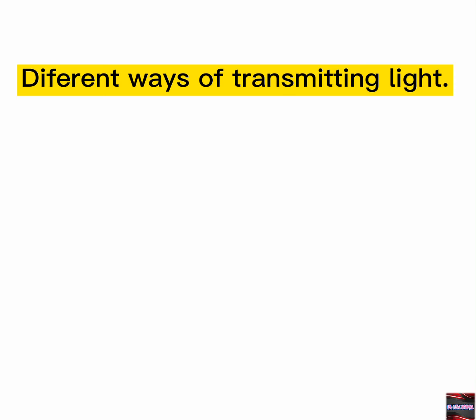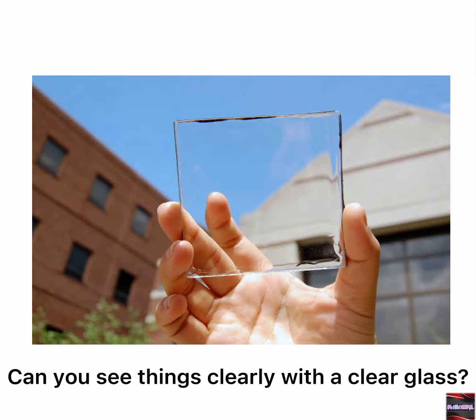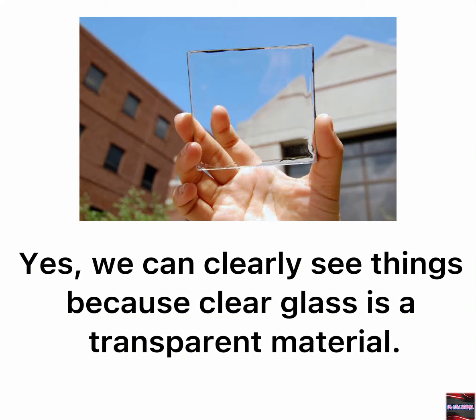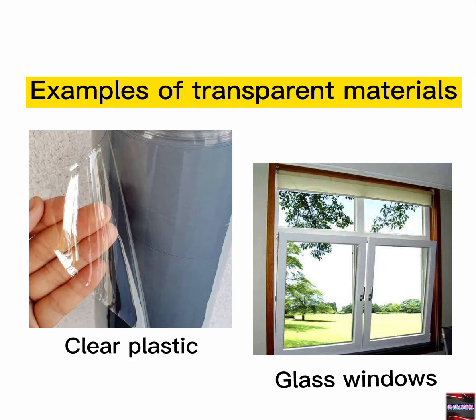Different ways of transmitting light: Transparent, Translucent, and Opaque. Can you see things clearly with a clear glass? Yes, we can clearly see things because clear glass is a transparent material. Transparent materials are materials that allow all light to pass through them. Clear plastic and glass windows are examples of transparent materials.